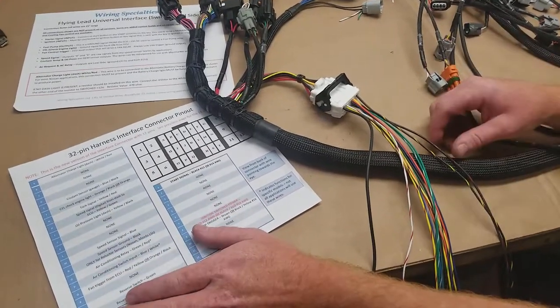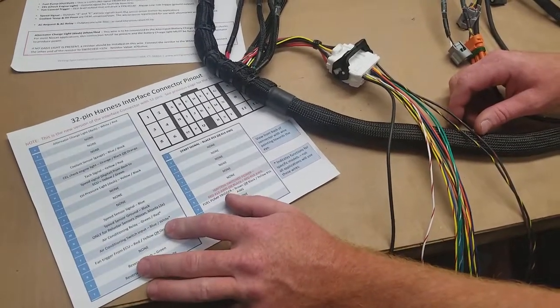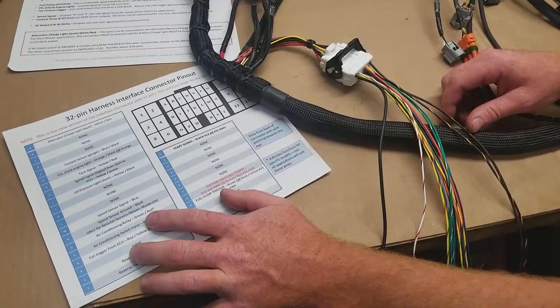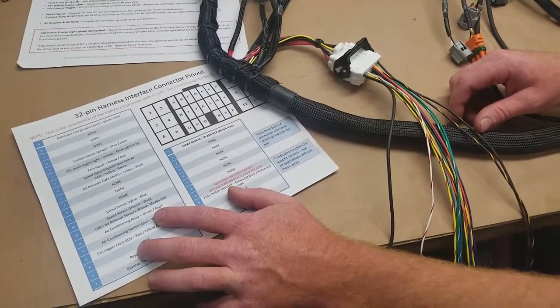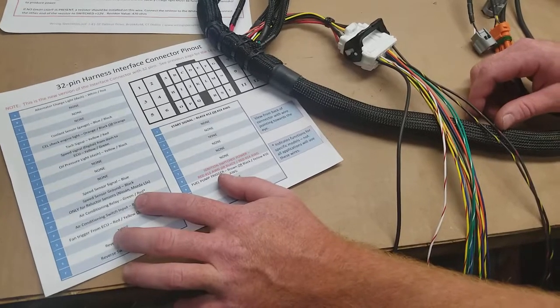So other items we can go over: air conditioning switch. This is going to be a ground input. Air conditioning relay is, again, going to be a ground output, just like the fuel pump, and it's going to go to a relay that turns your compressor on.